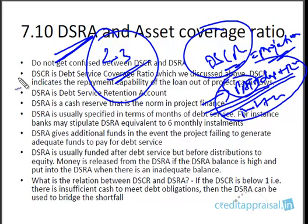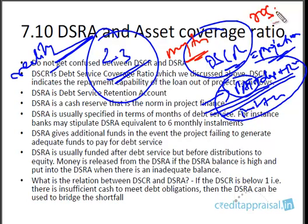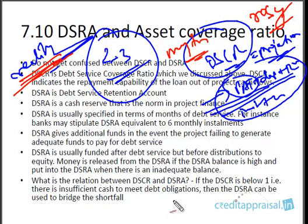DSRA is different — DSRA is reality, not a projected figure. The projected profitability may not be achieved, but DSRA is a real account maintained by the company. It is a true account. DSCR might actually turn out to be a myth — the projected financials might be very rosy, but when it actually comes to reality the company may not achieve the projected profitability. DSRA provides real comfort to the banker because in case the company cannot meet the repayment obligation, bankers will draw upon this DSRA.